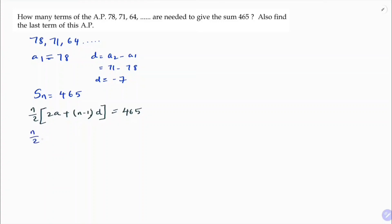Now you substitute the values. So n by 2, 2A, A is 78 plus n minus 1 into D. D value is minus 7 equals 465. So n by 2, 2 into 78 is 156 minus 7n, minus of minus plus 7 because n into minus 1 into minus 7 is plus 7 equals 465.